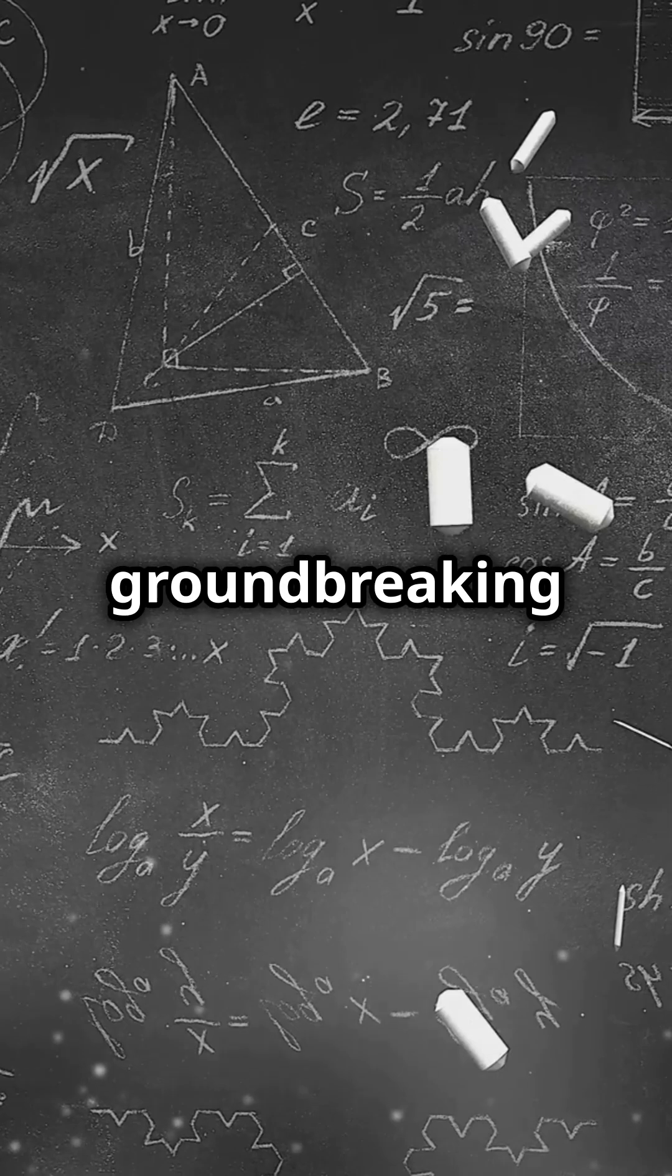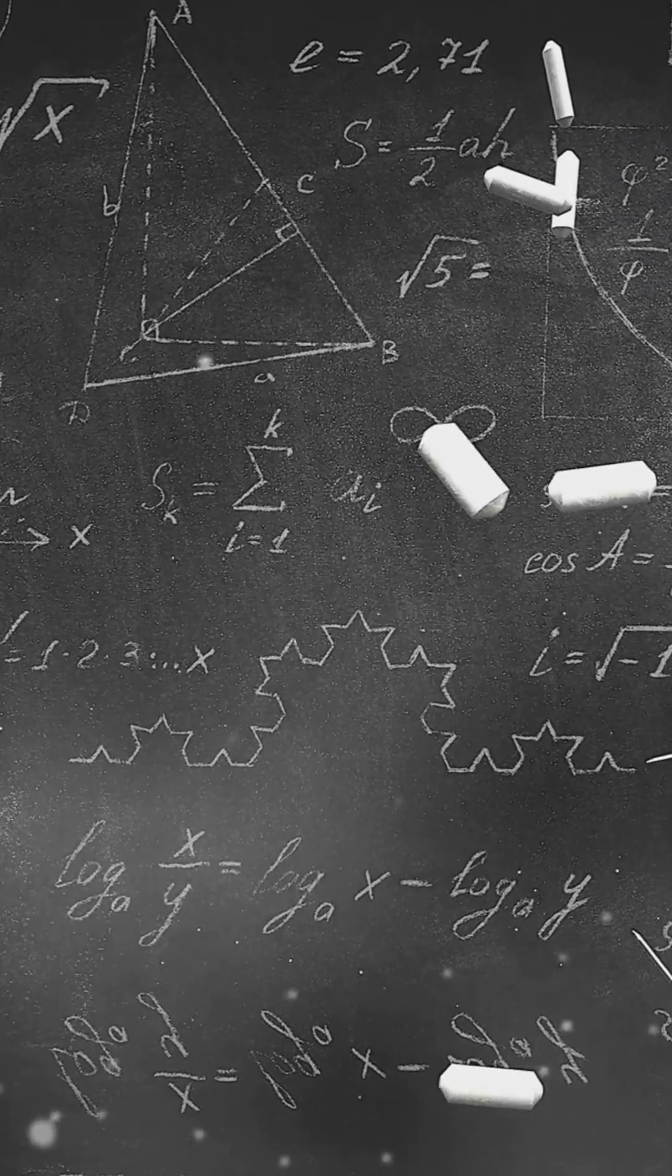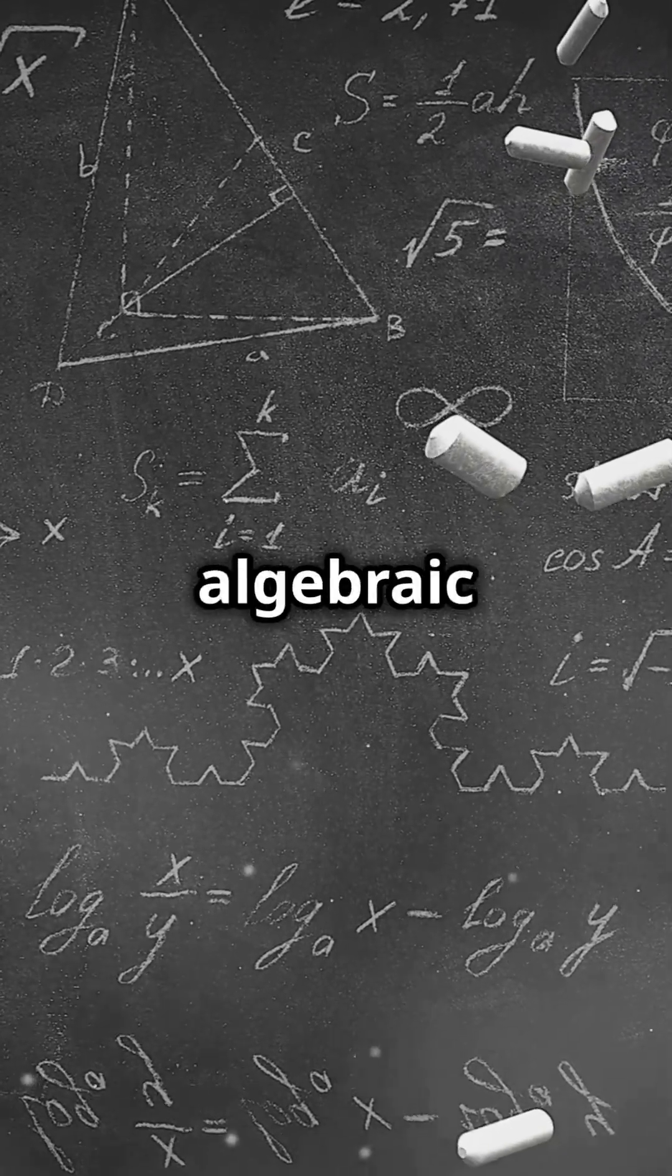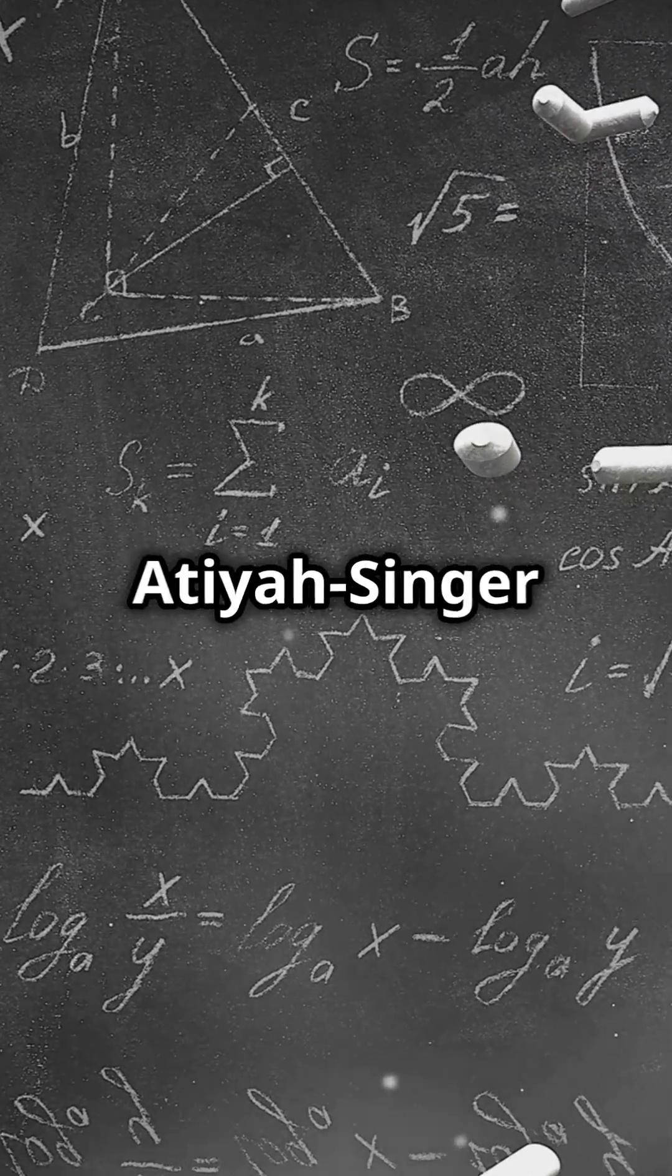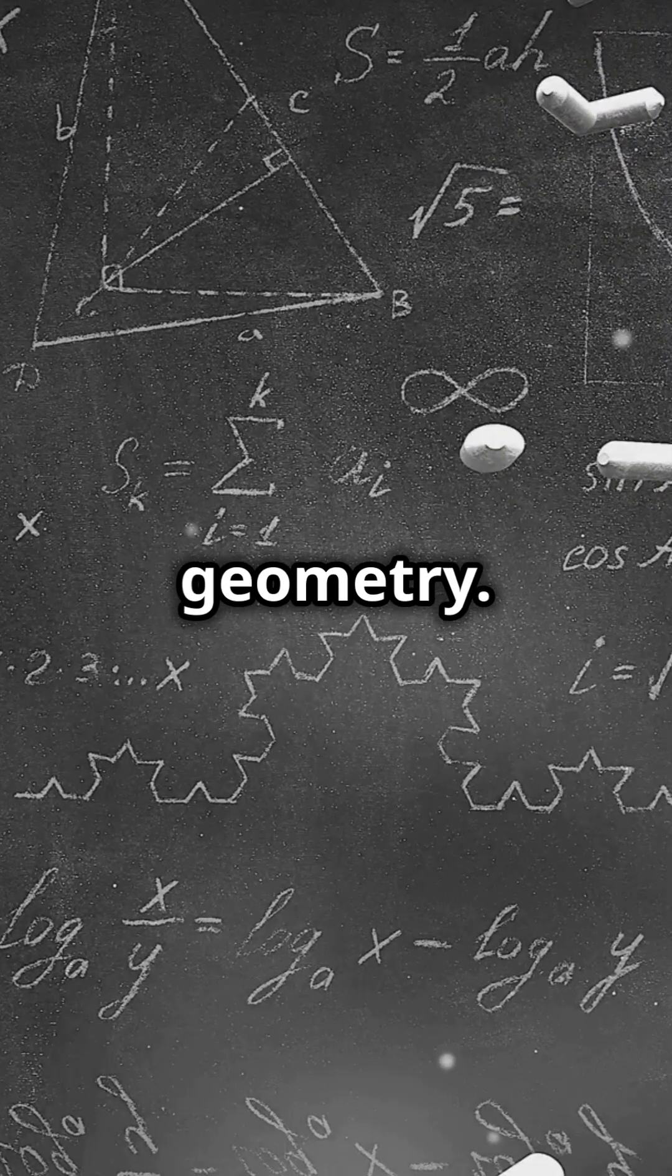Known for his groundbreaking work in algebraic topology, algebraic geometry, and number theory, Atiyah has left an indelible mark. In algebraic topology, he co-developed the Atiyah-Singer Index Theorem, which connects analysis, topology, and geometry.